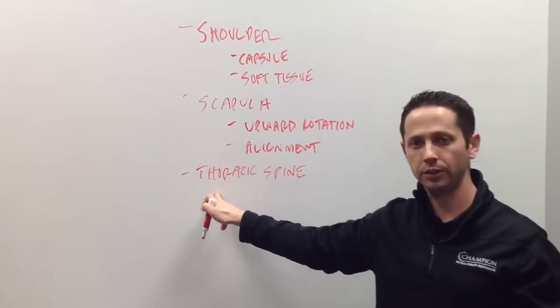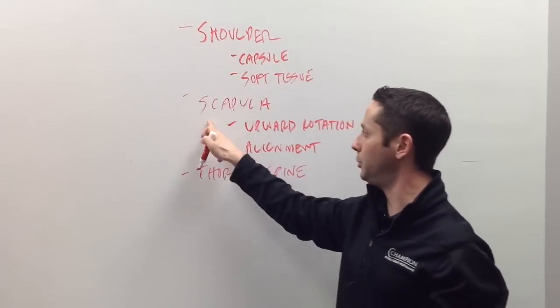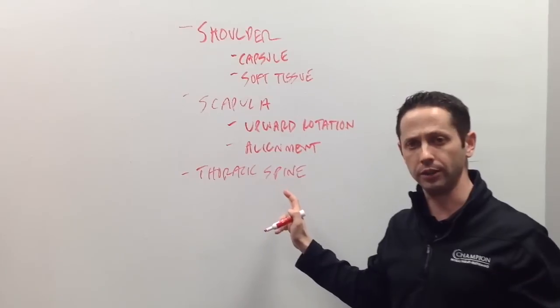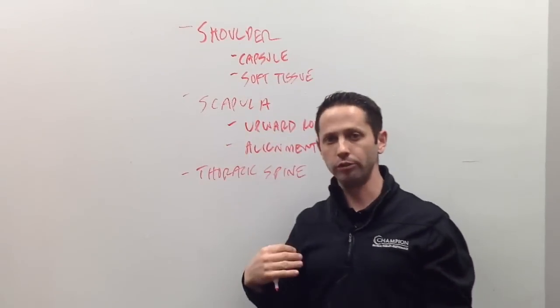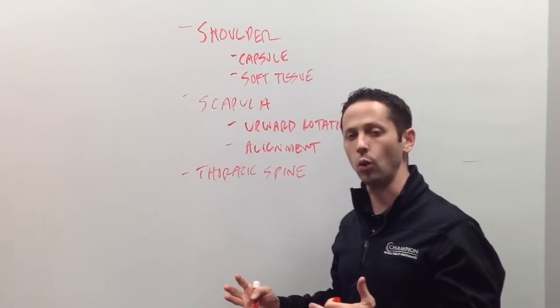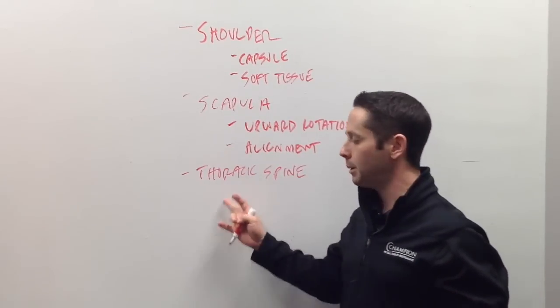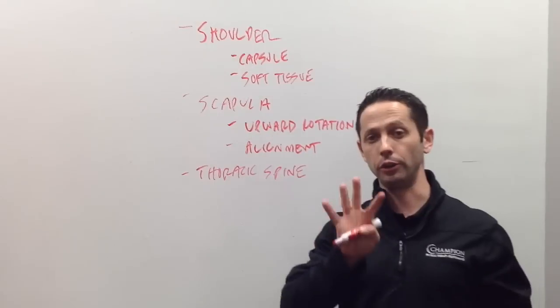These are really the top three areas. So one's the shoulder, two is the scapula, three is the thoracic spine. Those are the areas we look for when we're looking for a potential culprit as to why you may have lost overhead mobility. But remember at the beginning of this video, I said there are four things.